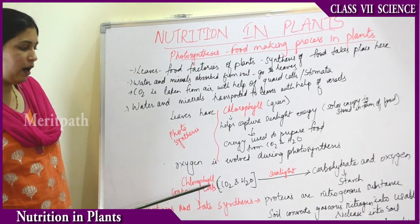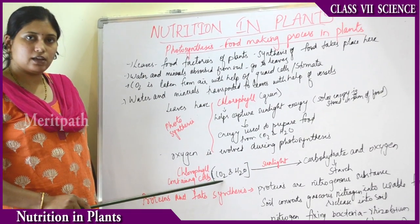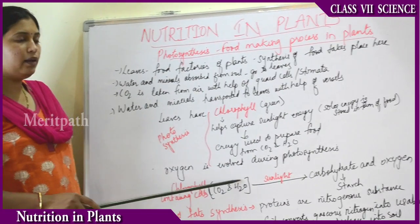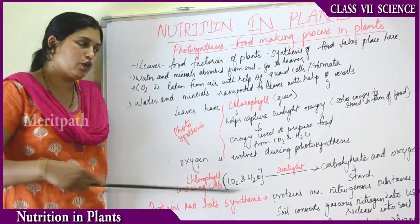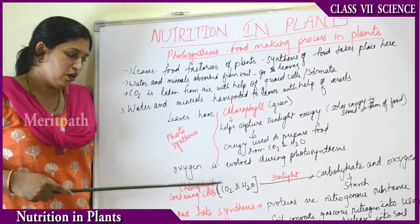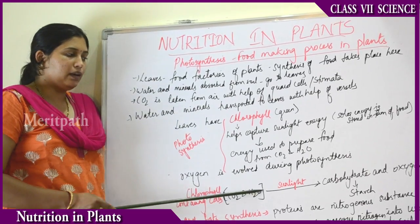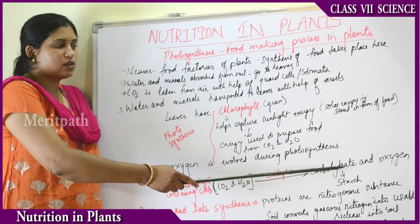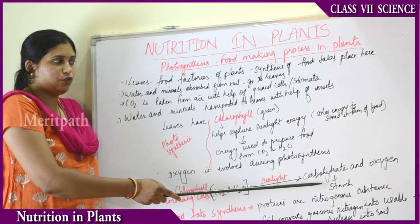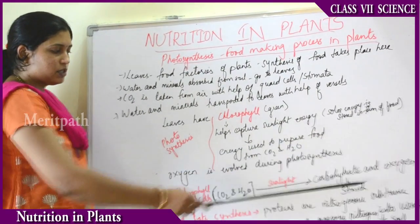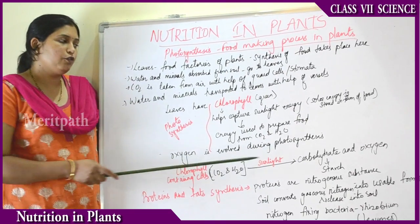Chlorophyll-containing cells, carbon dioxide from the air, and water from the soil, all together in the presence of sunlight, combine to produce carbohydrate and oxygen. This is known as the photosynthetic reaction or equation. Carbohydrate is essentially starch, which gives energy to the plant. It is stored in the plant in the form of solar energy, and oxygen is evolved in this process. This entire process is done for the production of carbohydrates.